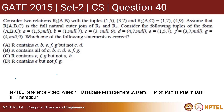Hello everyone, we want to discuss a question from GATE 2015 CS paper. This question is based on DBMS concepts. The question says: consider two relations R1 having two attributes A and B with tuples (1,5) and (3,7), and another relation R2 having two attributes A and C with tuples (1,7) and (4,9).